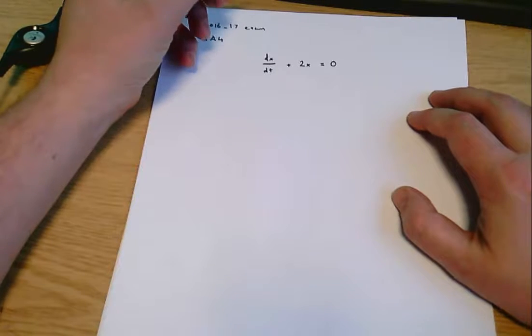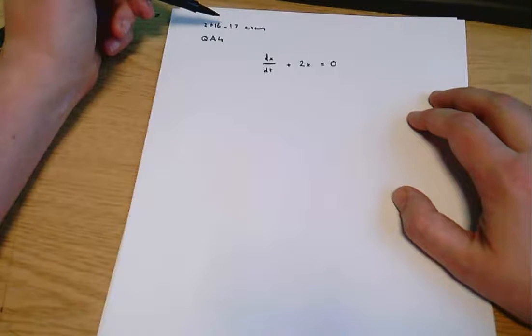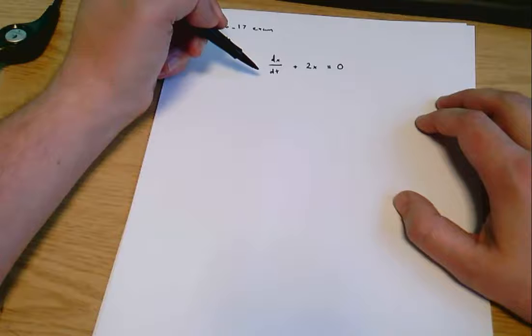This is a short question. It's from the 2016 to 2017 exam. It's question A4 and we're asked to solve dx by dt plus 2x equals zero.